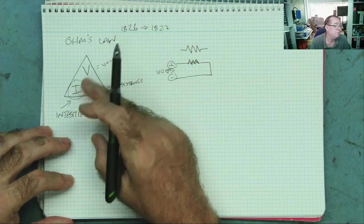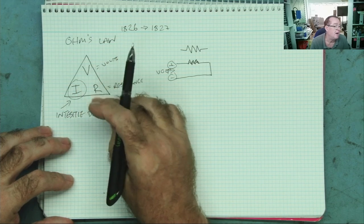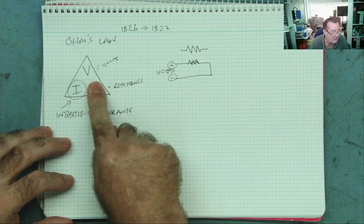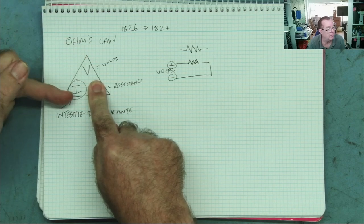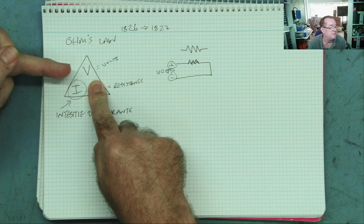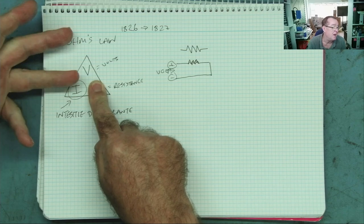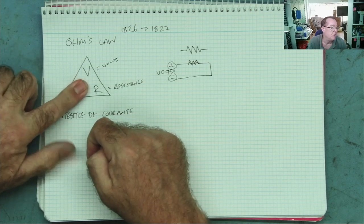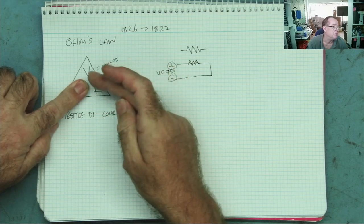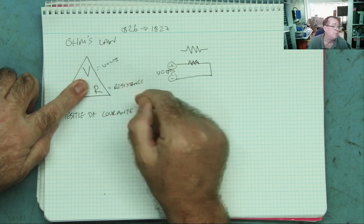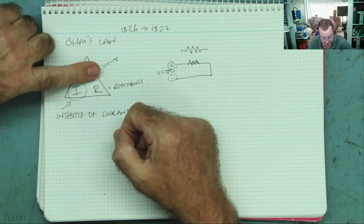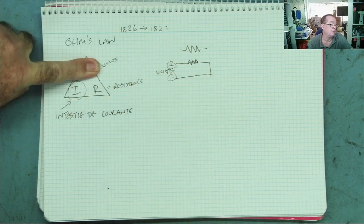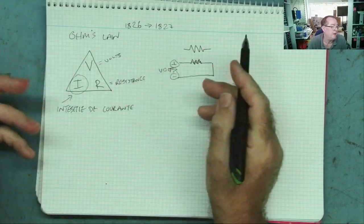To find any one of the three values, you need to know the other two. If you want to know the current, cover I — you get V over R, measure volts and resistance, and you can work out the current. If you want to know the voltage, measure resistance and current, and that gives you the volts. We can measure these with a meter.